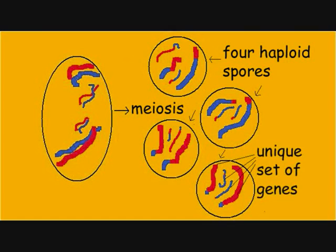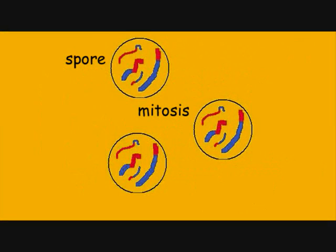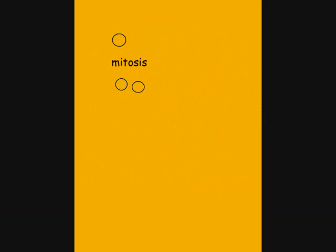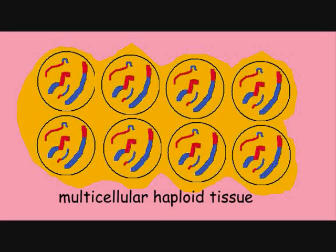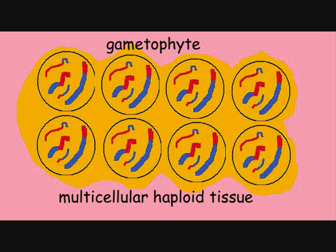Each spore has a unique combination of parental genes in its single set of chromosomes. Each spore has the capability of dividing by mitosis to form a multicellular haploid tissue contained within the male and female organs. We refer to the multicellular haploid stage as the gametophyte, which means gamete-producing plant.